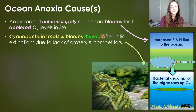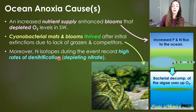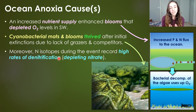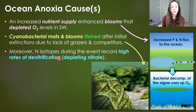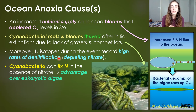Cyanobacteria thrived after the initial extinction event due to the lack of grazers and competitors that had gone extinct. This resurgence was also enhanced by the fact that cyanobacteria have an advantage over other bloom-forming algae when it comes to nitrogen. Nitrogen isotopic measurements during this event record high rates of denitrification, which depletes biologically usable nitrate. However, cyanobacteria can fix nitrogen or convert it to nitrate, giving them an advantage over eukaryotic algae that lack this ability.